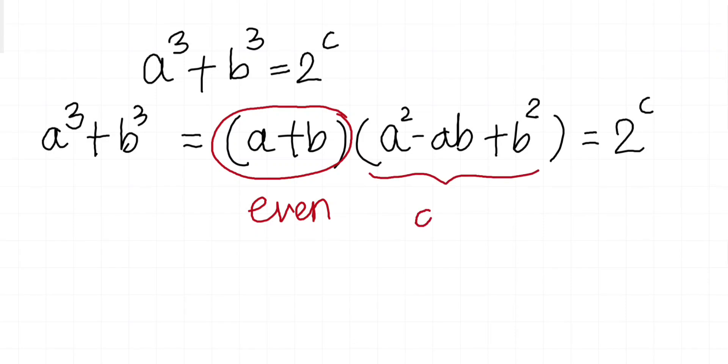Why? Because this must be some power of 2 and this must be some another power of 2. And because this quantity is odd, it happens that this must be 1. So this whole quantity is nothing but 1.